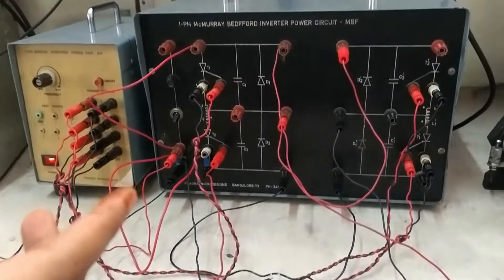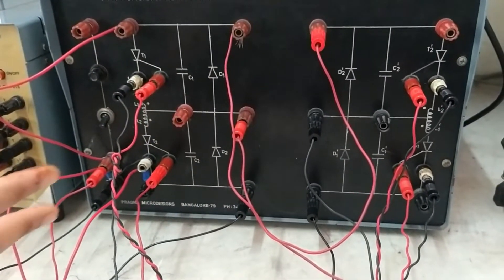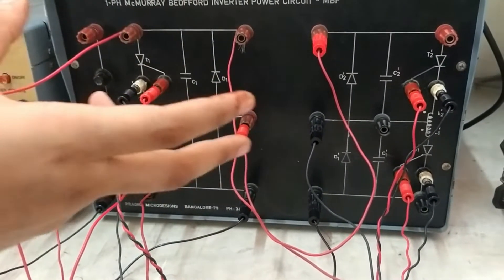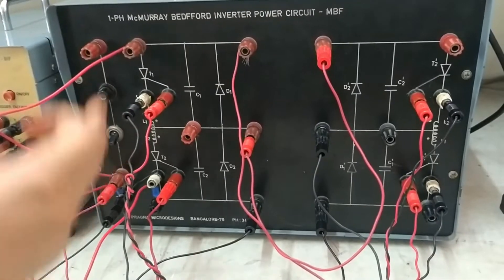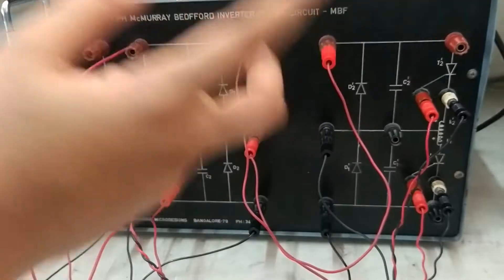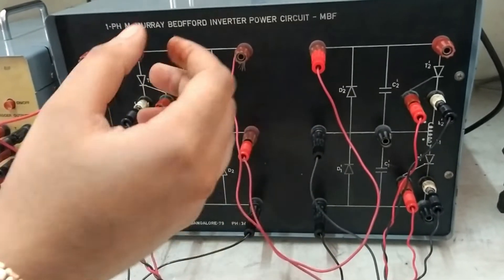The working of this inverter is when T1 and T2 will be turned on during conduction mode. And during the time to commutate these two thyristors, T2 dash and T2 will be turned on. So it applies a reverse bias across T1 and T1 dash and these two will be turned off.